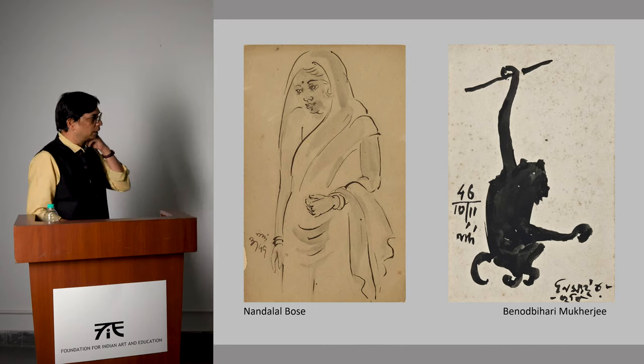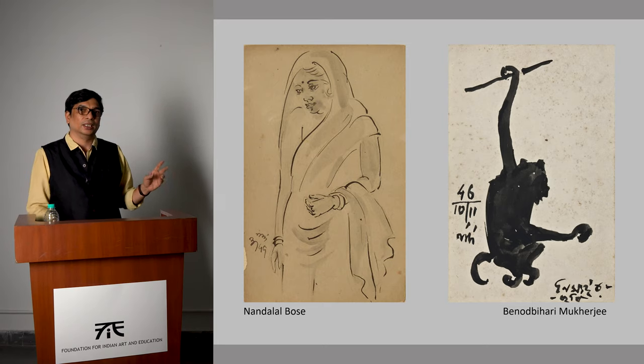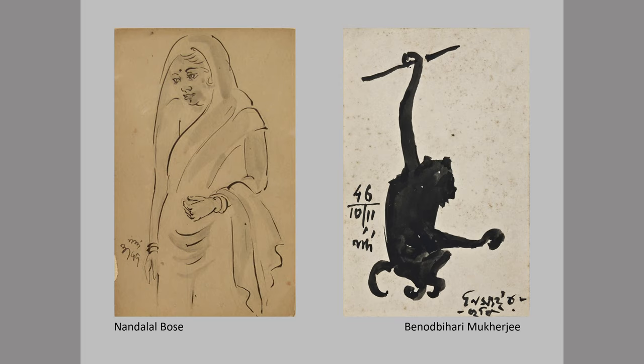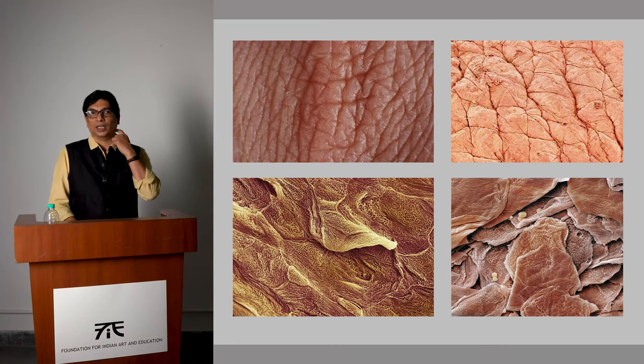As I was talking about degrees of abstraction — a simple drawing like Nandalal Bose's or Binod Bihari's — if you take a picture of a monkey or a lady, the kind of detail you would see in a photograph is all filtered out. So even in a plain drawing there is a degree of abstraction. Another kind of abstraction is when you go very close to something and you do not perceive the outer contour, you start only looking at the detail, which gives you a sense of abstraction.